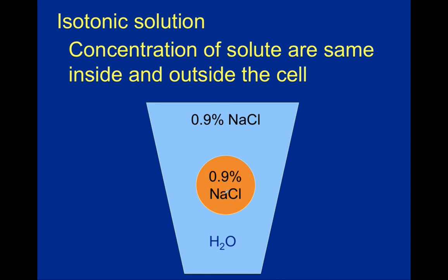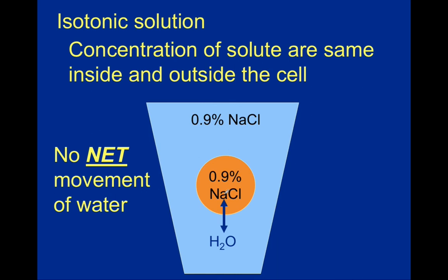Because the outside solution is isotonic, we don't get the movement of fluid like we saw in osmosis. There is no net movement of water at all. Water will be moving from the inside towards the outside and also from the outside towards the inside due to molecular bombardment, but because the concentration of sodium chloride is equal between the solution and the inside of the cell, there's no net movement of water. Keep in mind — when we say isotonic, hypotonic, or hypertonic solution, we're talking about the fluid on the outside of the cell.